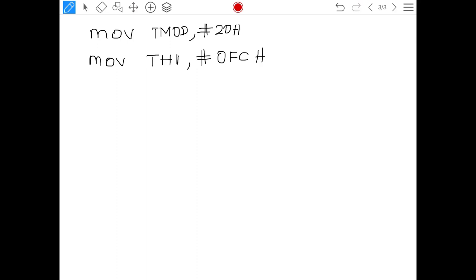Now, I am supposed to send the data before that I need to load the SCON that is the serial communication control register with the value 50H. Why 50H? I am sending 8 bit of data with one start and stop bit. This is serial communication mode 1.